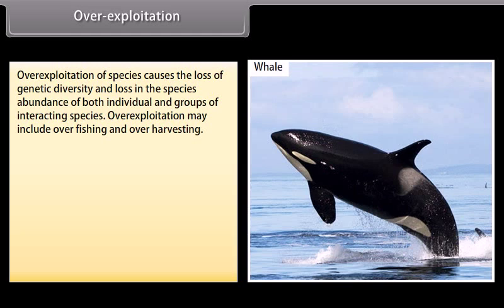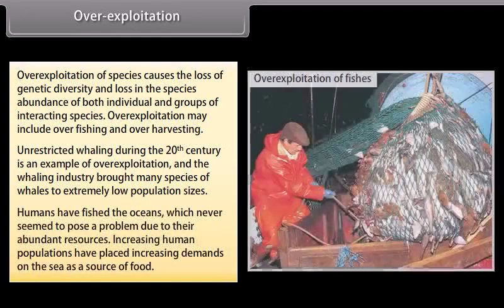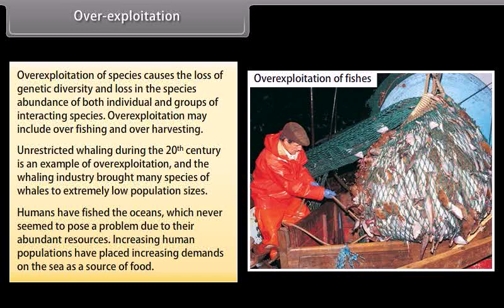Over-exploitation of species causes the loss of genetic diversity and decline in the abundance of both individual and groups of interacting species. Over-exploitation may include over-fishing and over-harvesting. Unrestricted whaling during the 20th century is an example of over-exploitation, and the whaling industry brought many species of whales to extremely low population sizes. Increasing human populations have placed increasing demands on the sea as a source of food.